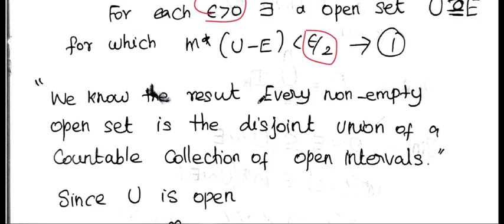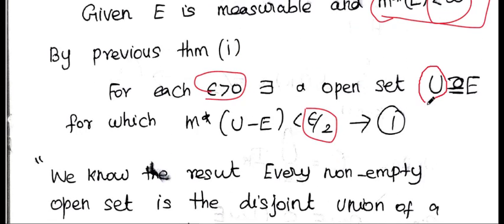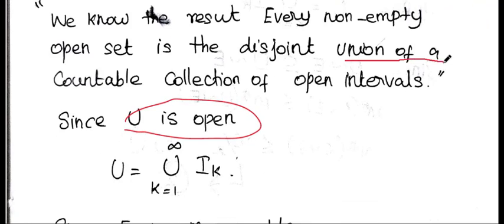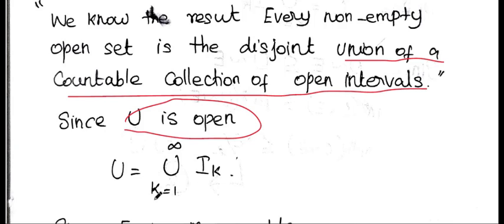We know the result: every non-empty open set is the disjoint union of a countable collection of open intervals. This is a known result, not in our syllabus, but we use it as a reference. Since U is open, we can write U as a countable disjoint union of open intervals.